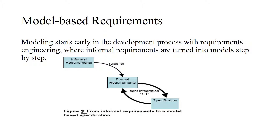Modeling starts early in the development process with requirements engineering, where informal requirements are turned into models in three steps. In the first step, informal requirements are assumed to be unstructured with no specific syntax. In the second step, using structuring rules, informals are converted into formals manually, resulting in a loose coupling between informal and formal requirements.